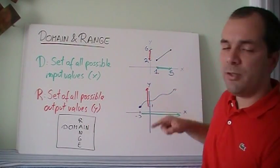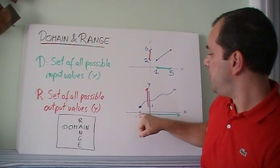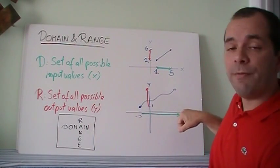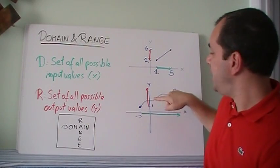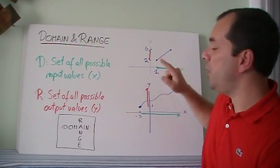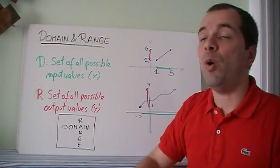If my function is squiggly like this, same idea. It just starts at minus 3, and it goes on forever on the x for the domain. And it starts at 1, and it goes all the way up to infinity for the y.